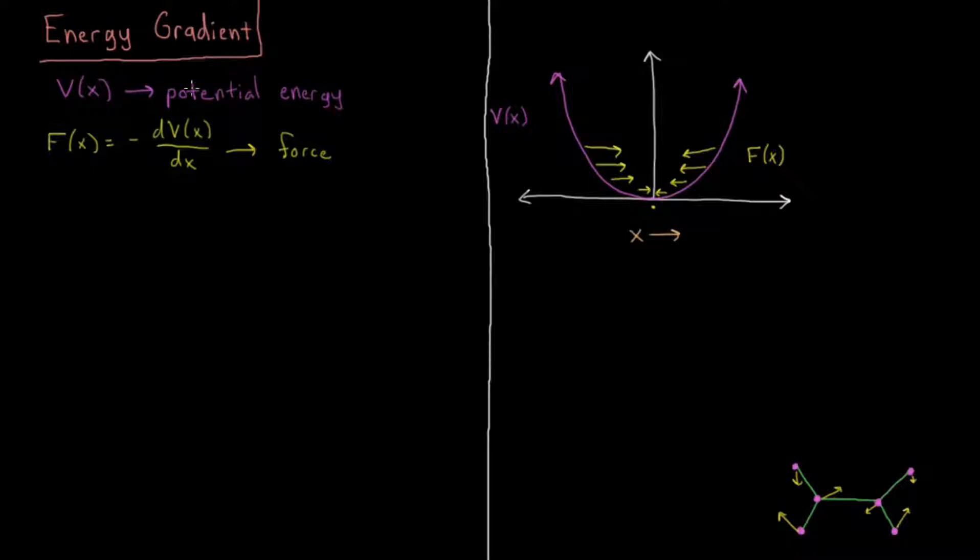And that depends on how that potential changes over distance. So F, the force that's felt by an individual atom, would be minus the first derivative of V with respect to x.